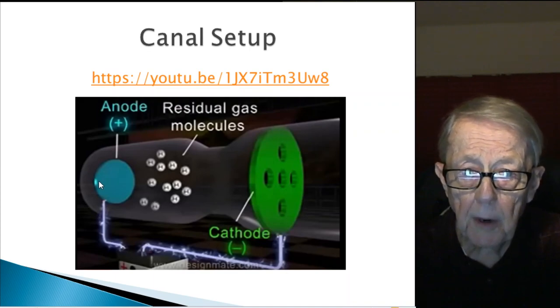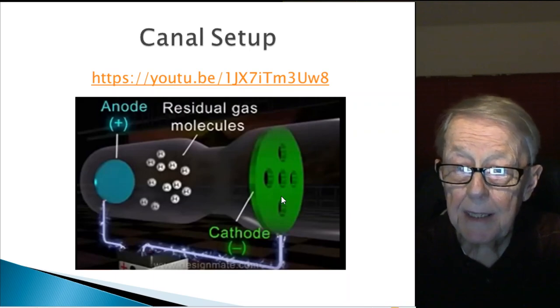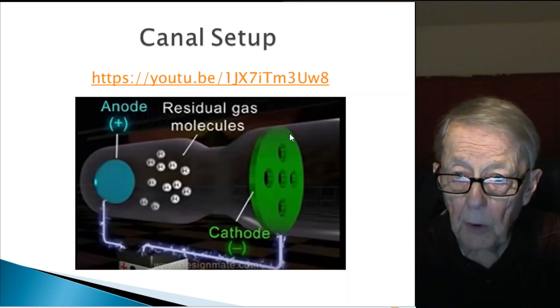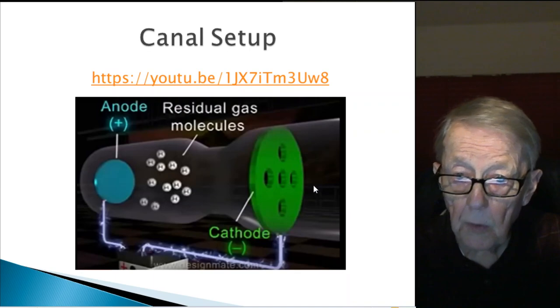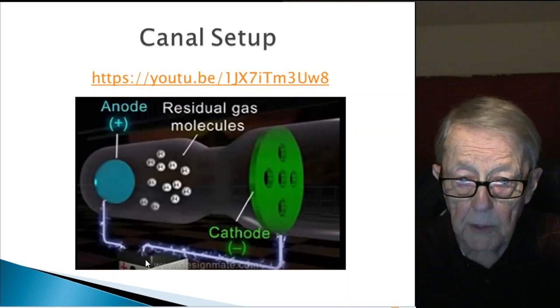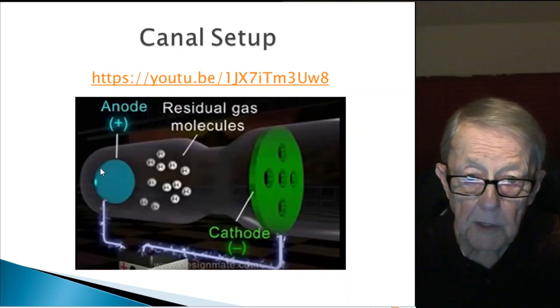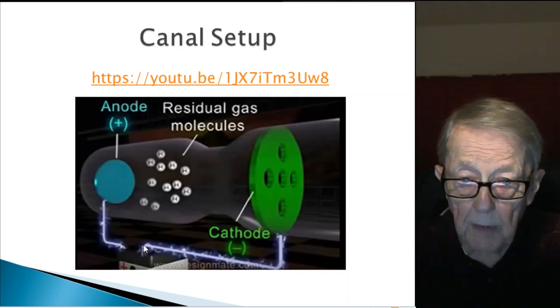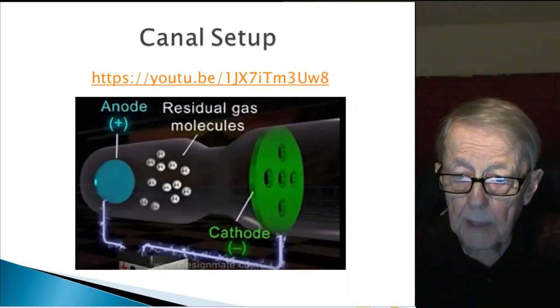There's an anode here, a positive anode to the left and a cathode to the right. The unique setup here is that the cathode not only fills this side to block the gases, but there's holes or canals, if you will, allowing the protons to flow through. And as usual, you have a high voltage DC source with the negative side tied to the cathode and the positive side to the electrode, showing that you have electron flow in this direction.